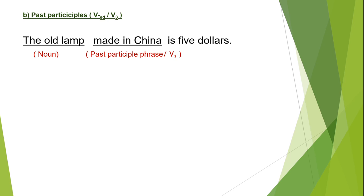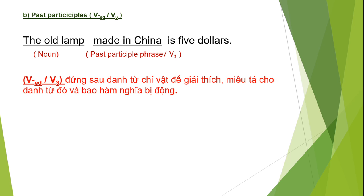Danh từ 'the old lamp' là danh từ chỉ vật, khác với bên kia là danh từ chỉ người. Ghi chú: verb -ed hoặc verb 3 đứng sau danh từ chỉ vật để giải thích, miêu tả cho danh từ đó, và bao hàm nghĩa bị động — vì nó là vật, chỉ bị tác động lên thôi, không thể chủ động được.